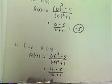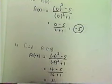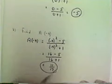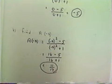16 minus 5 is 11, 16 plus 1 is 17. So we get 11 seventeenths as the answer.